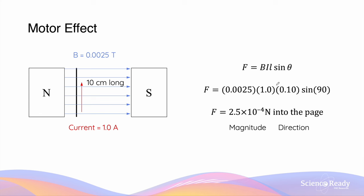Let's look at an example with numbers. Suppose we have a straight conductor that's 10 cm long, placed inside a 0.0025 Tesla magnetic field, with a 10 Ampere current flowing through the conductor.